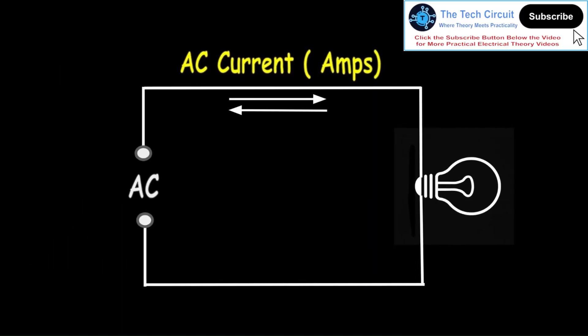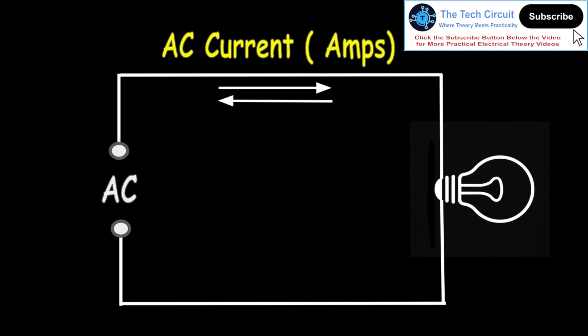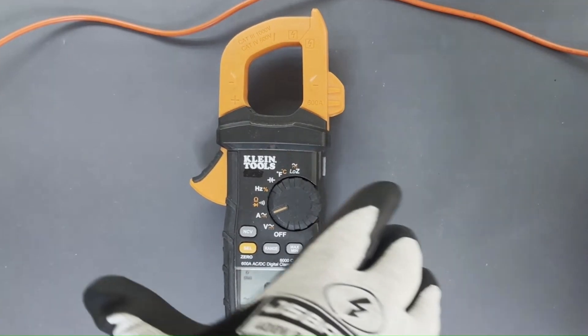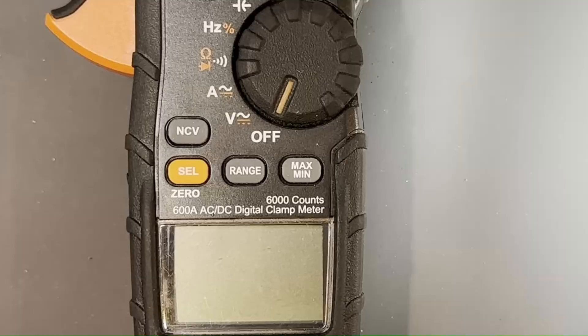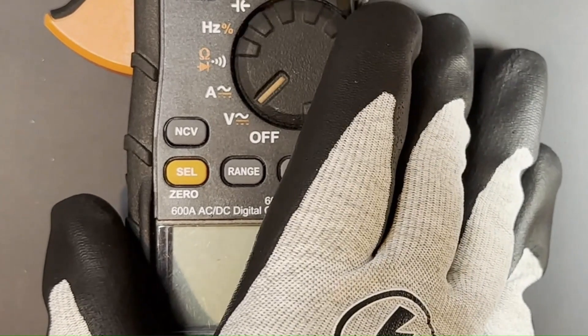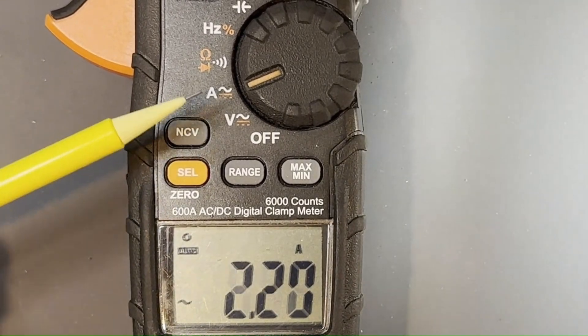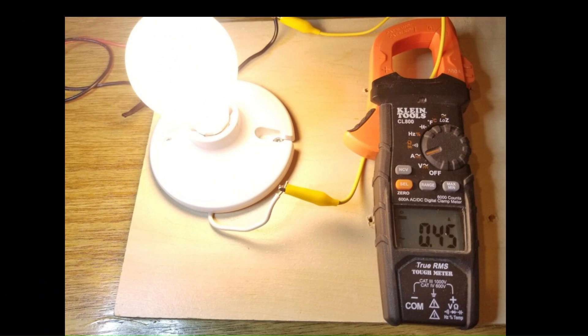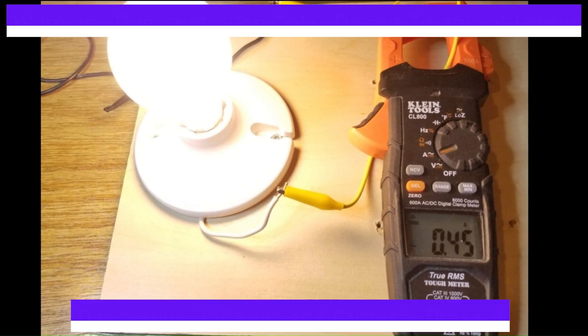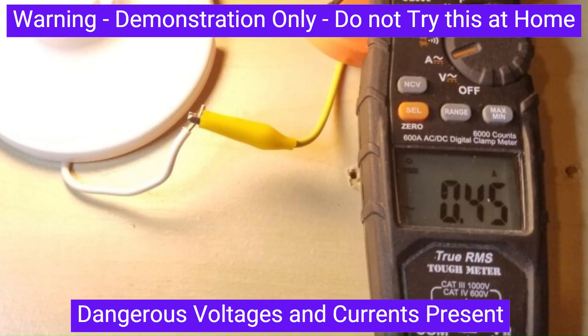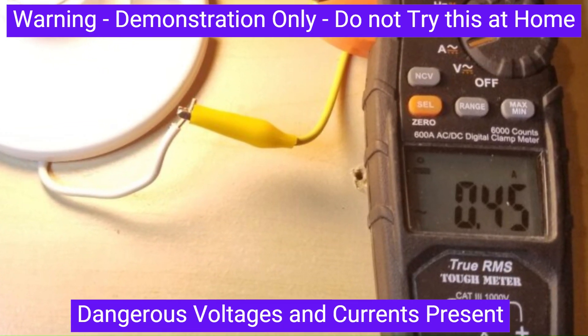Measuring AC current. The AC current function measures how much AC current is flowing through a conductor such as a wire, and is measured in amps. The Klein meter uses a non-contact clamp allowing you to place the clamp around the conductor you want to test. To measure AC current, turn the dial to the A position. The meter will default to the AC current mode. Find the single conductor you want to test. Shown here, the meter is being used to measure the current through a wire connected to a light bulb. The measured current is 0.45 amps.